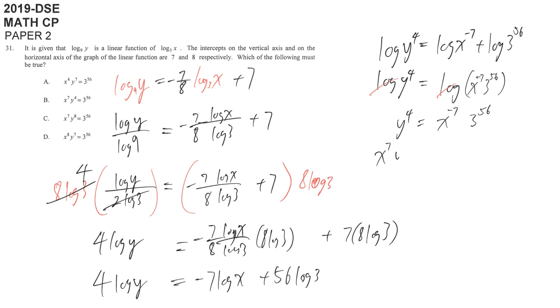y power 4 equals x power 7 times 3 power 56. That's why it's x power 7 y power 4 equal to 3 power 56 after some calculation. Again, the first time is a long time to calculate but after practice you should be able to finish it within 3 minutes.